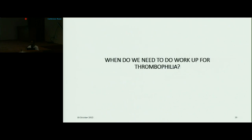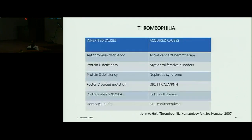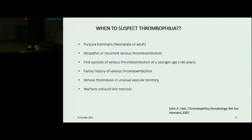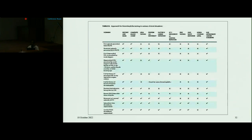When do we need to work up for thrombophilia? We have both inherited and acquired causes of thrombophilia, but we need not evaluate every patient. We should suspect thrombophilia when a patient presents with purpura fulminans, idiopathic or recurrent venous thromboembolism, first episode of VTE at a younger age, family history of VTE, venous thrombosis in an unusual vascular territory, or warfarin-induced skin necrosis. In this approach, for every patient we need history, physical examination, and a complete blood count. APLA can be done in almost all cases, but inherited thrombophilias like protein C/S deficiency, factor V Leiden, or antithrombin 3 deficiency should only be done in specific situations.